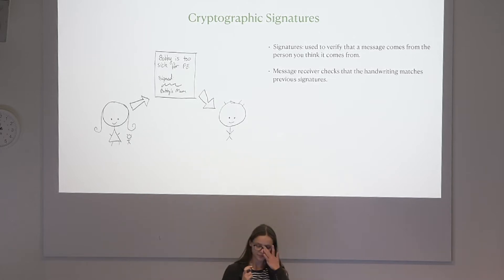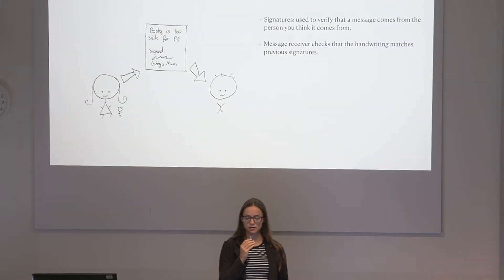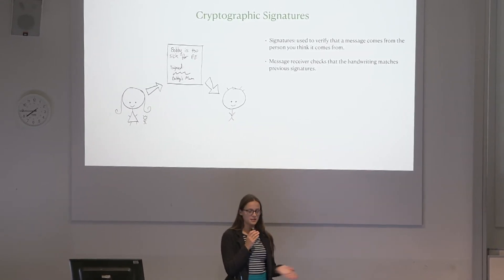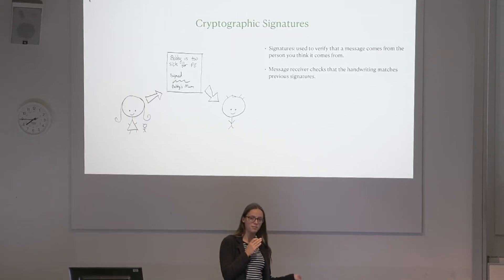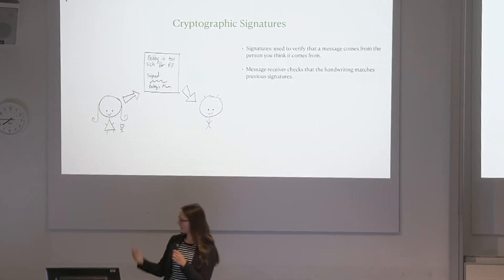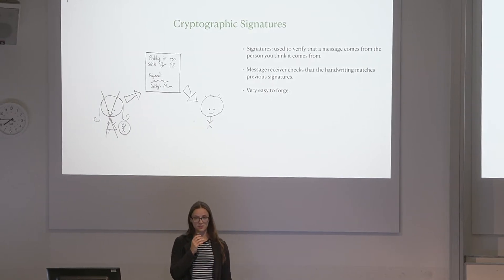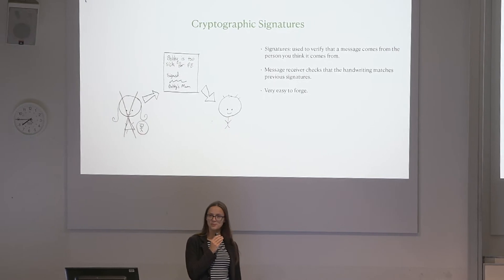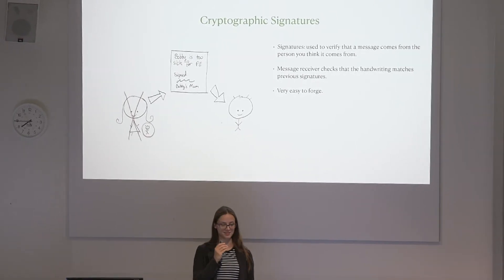When you have a normal signature you're just trying to verify that the note saying that a child is trying to get out of PE actually comes from their mum rather than from the child. Obviously this is something which is very forgeable — I'm sure most people in this room have forged their mum's signature at some point in time.